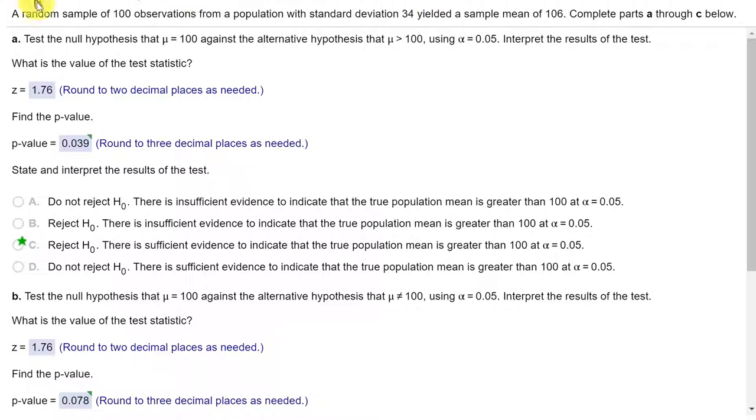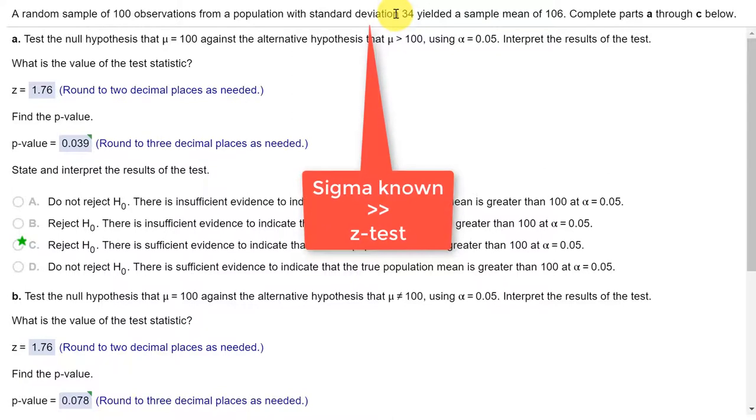If we read this, this is a random sample of 100 observations from a population with a standard deviation of 34 yielded a mean. Critical to analyze this: this is a single sample, not two samples. The population standard deviation sigma is given. That tells you that we're going to use a z-test.